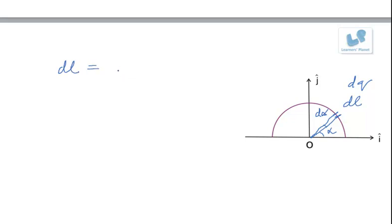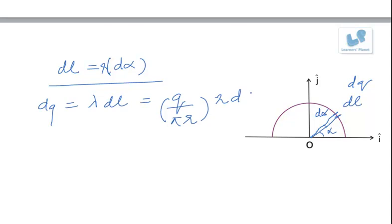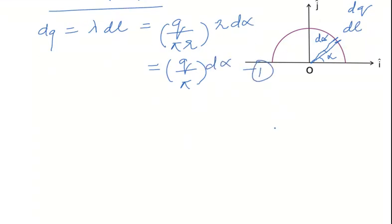Sorry, the angle times the radius - angle is dα and arc length will be given by r dα. Now charge dq will be equal to λ dℓ, or we can write it as q/(πr) times dℓ, which is r dα, which can be further written as (q/π) dα. This is one thing. Now second: